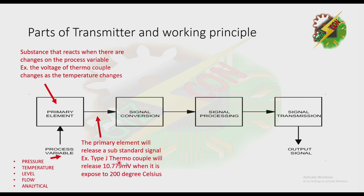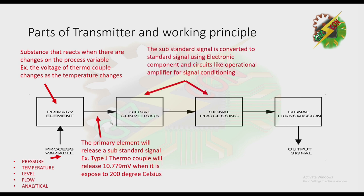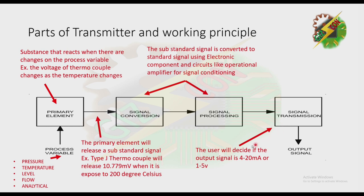The primary element releases a substandard signal. For example, a Type J thermocouple will release 10.779 millivolts when exposed to 200 degrees Celsius. Then we have signal conversion and data processing — at this stage, the substandard signal is converted to a standard signal using electronic components and circuits like operational amplifiers for signal conditioning. The 10.779 millivolts is now converted to a standard signal. For signal transmission, the user needs to decide if the output signal is 4 to 20 milliampere or 1 to 5 volts.